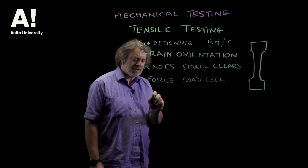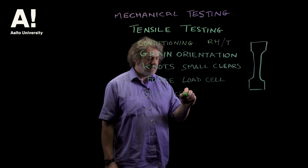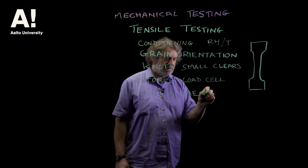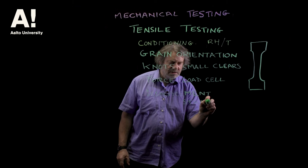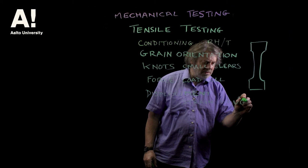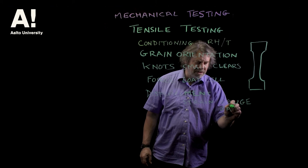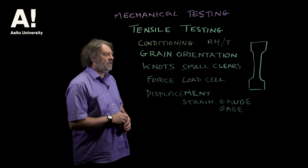You also need some way of measuring displacement, and that's where errors can creep in. To measure displacement we use something called a strain gauge. There are two spellings of strain gauge — a European spelling and an American spelling — so you'll find either in the literature.